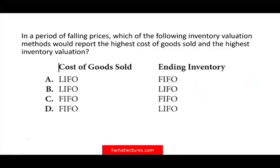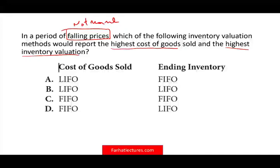Let's look at the first question. In a period of falling prices — which is not normal, but it can happen — which inventory valuation method would report the highest cost of goods sold and the highest inventory valuation? Do not try to memorize questions like this; make sure you understand them. Here's how I find the answer quickly: prices are falling, so I bought something for $7, then $6, $5, $4, $3, and $2.